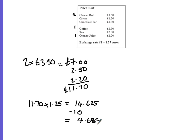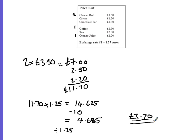We have 4.625 euros left, and then if we divide that by 1.25 that will tell us how many pounds are needed. That gives us £3.70, which is what the person needs to pay in pounds.